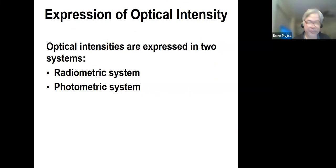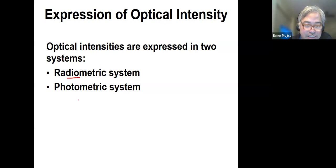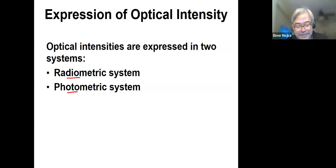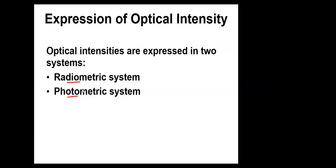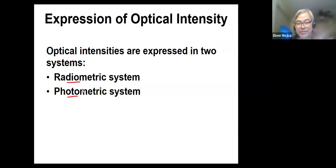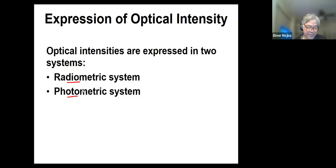If you're going to look at the expression of optical intensity, there are two systems: radiometric and photometric. These are two different approaches to measuring light, and each of them serves specific purposes.